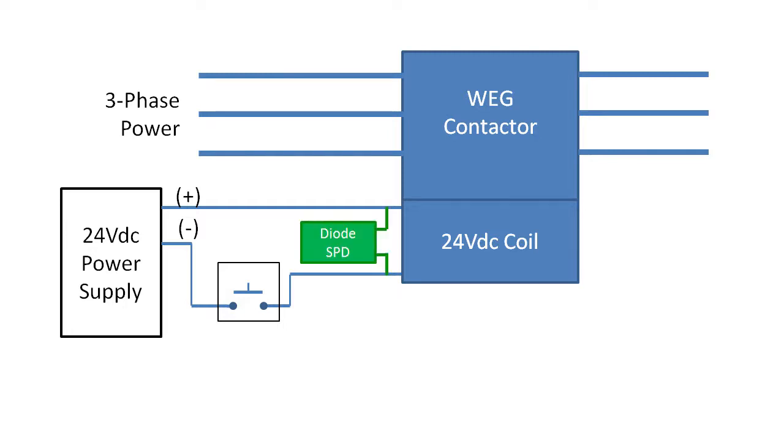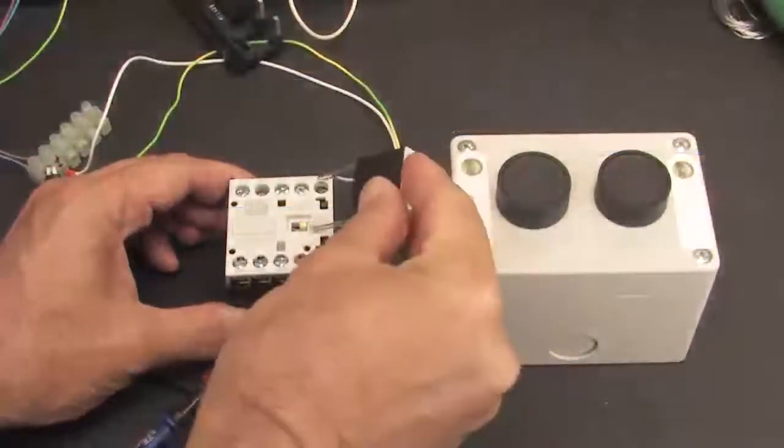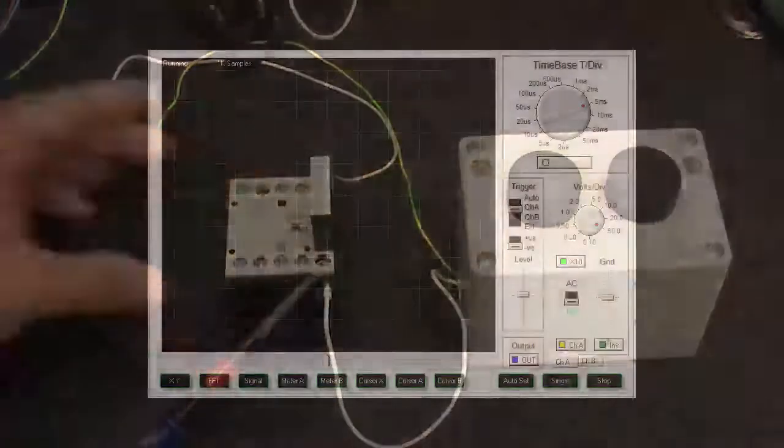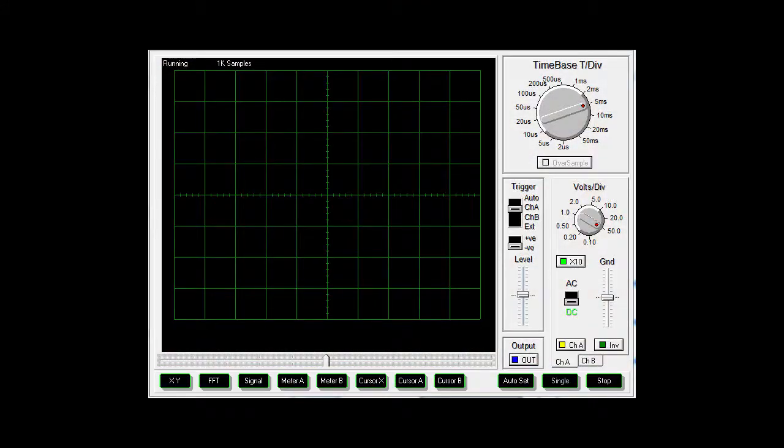For example, let's add a diode SPD to our switch example. On the WEG mini contactor we are using in this demo, it's easy to just plug it in. Again, we press the switch, we see the voltage drop from 24 to 0V, no surprises there,